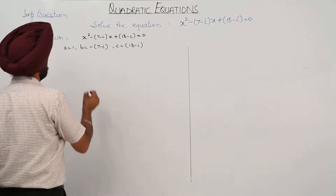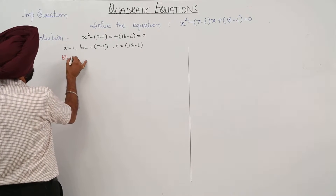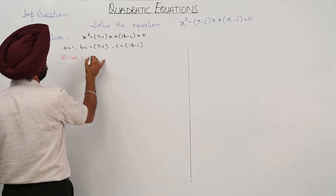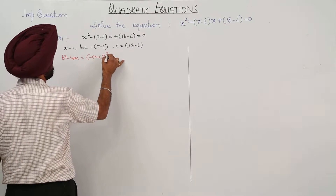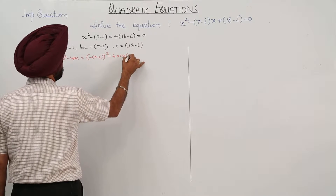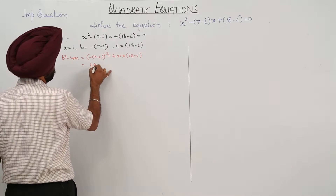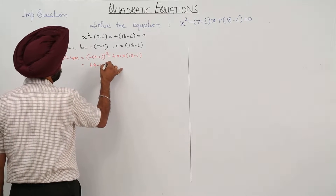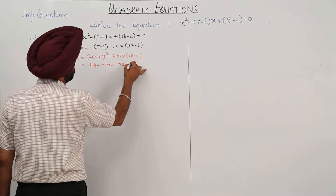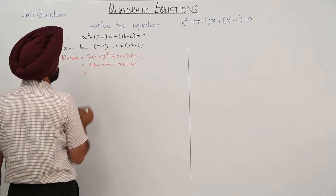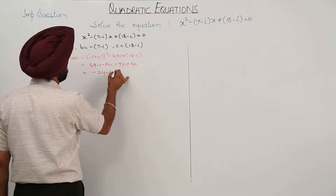Solving b² - 4ac: b² - 4ac = (7 - i)² - 4(1)(18 - i). This equals 49 - 1 - 14i - 72 + 4i, which gives 48 - 72 - 24 and -10i, so b² - 4ac = -24 - 10i.